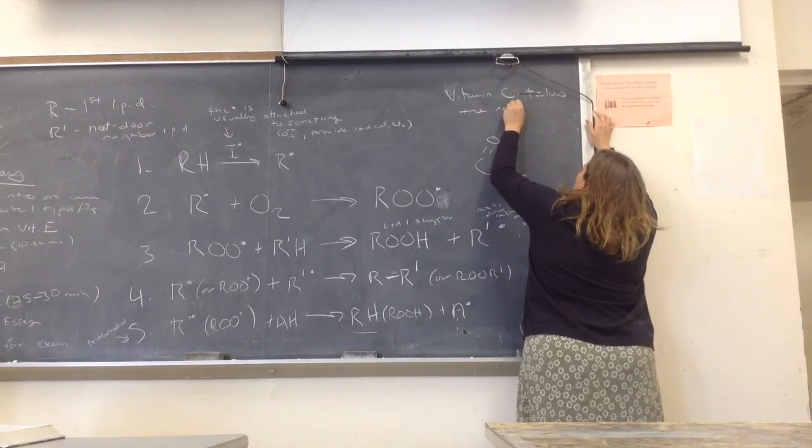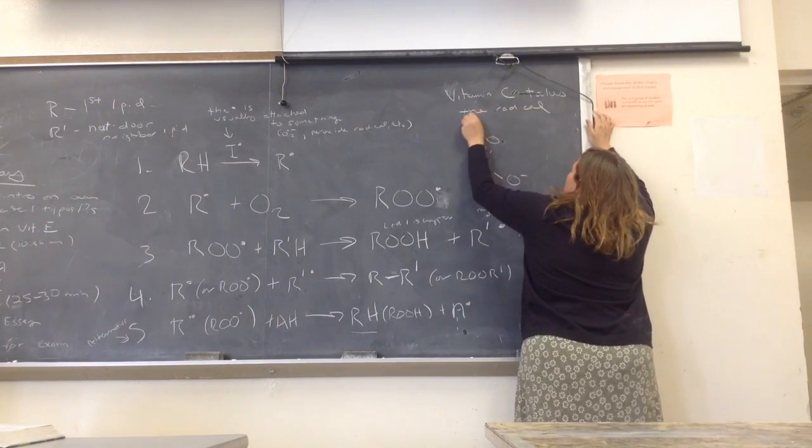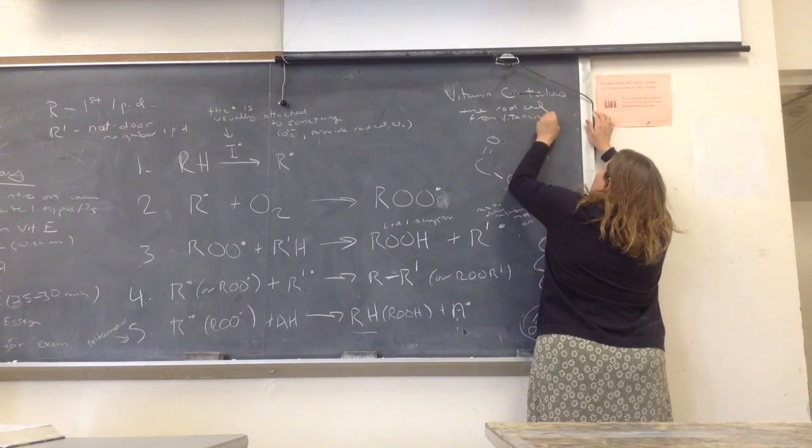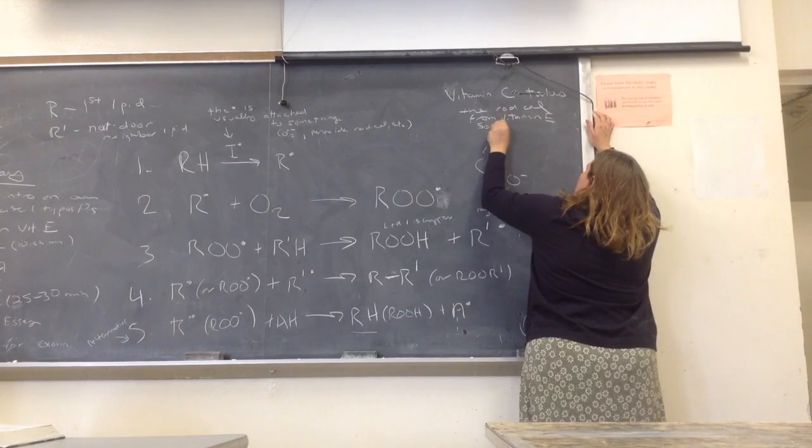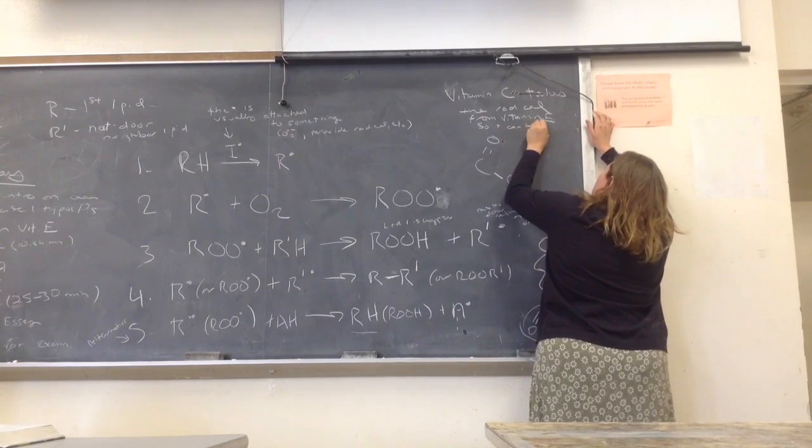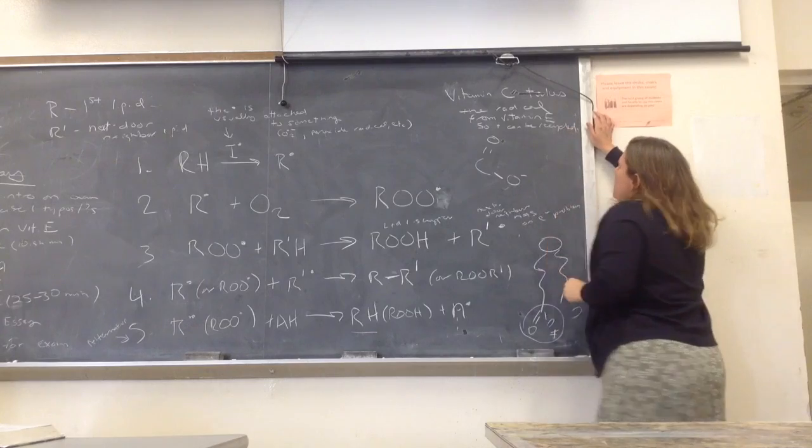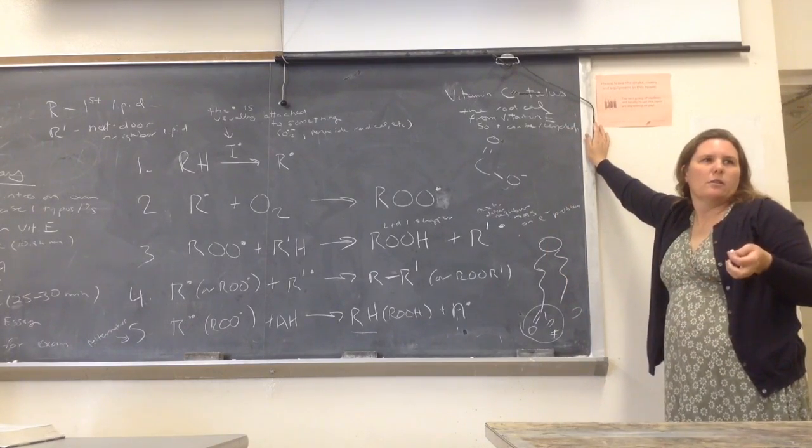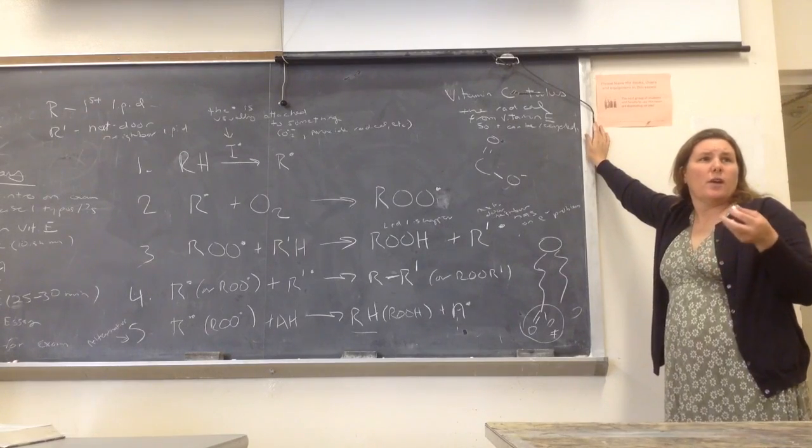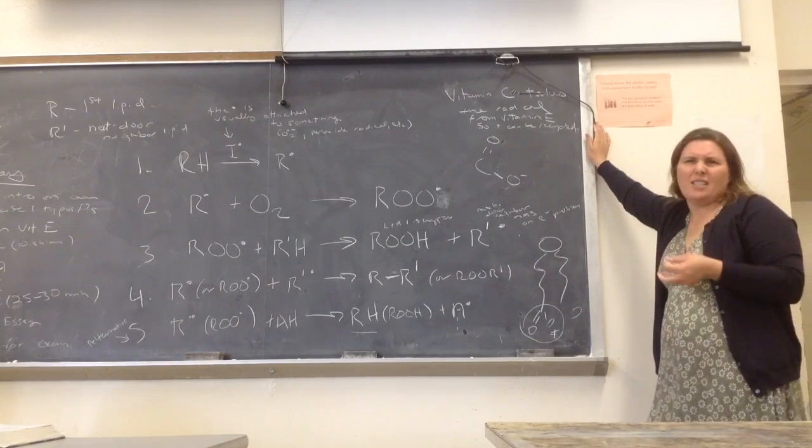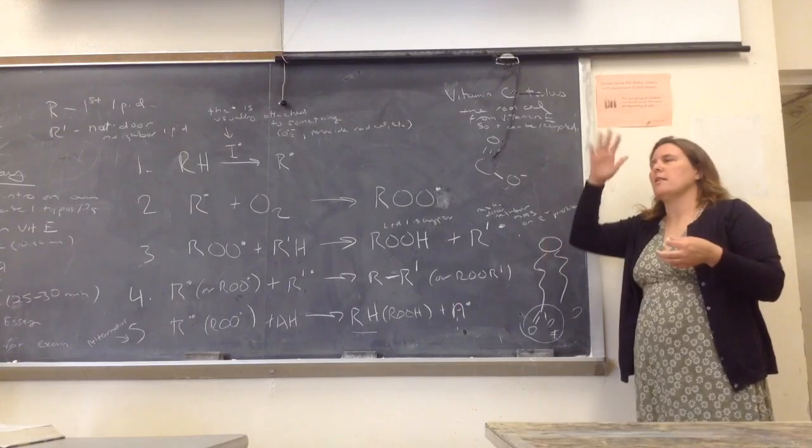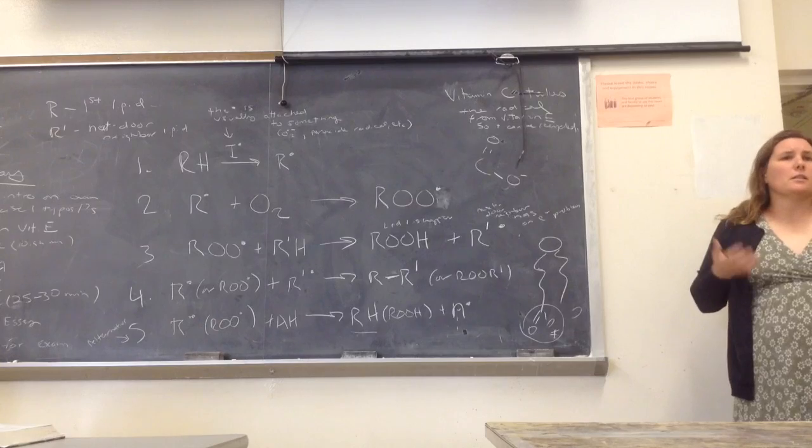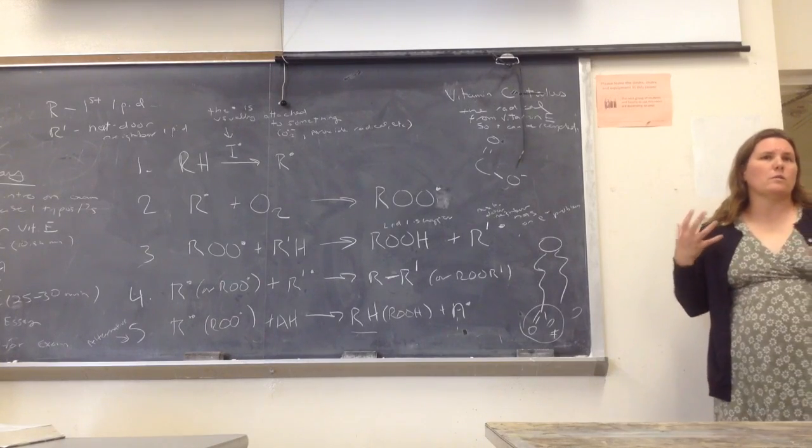The radical from vitamin C takes the radical from vitamin E so it can be recycled. So vitamin C is not as good an antioxidant as vitamin E, but it's still a good antioxidant. Relatively speaking, there's a big chart in the book where it ranks the relative abilities of these different molecules to hold an electron free radical.